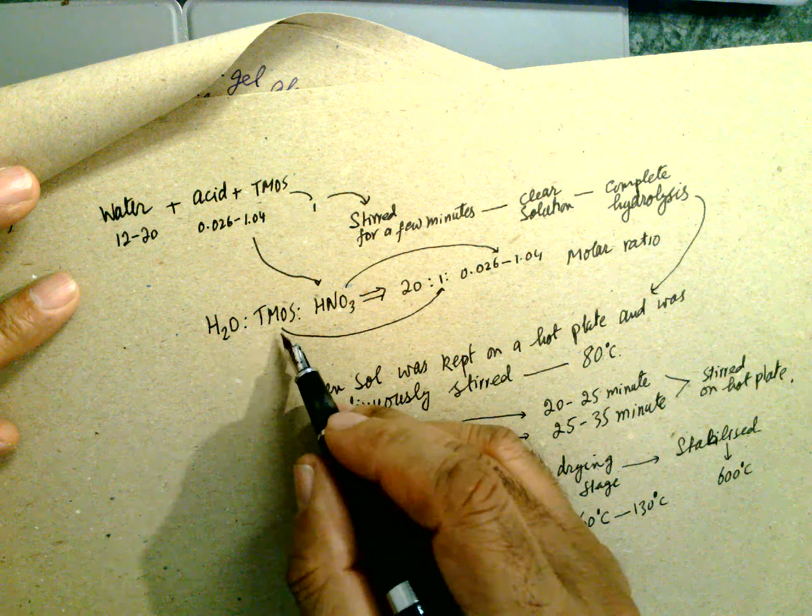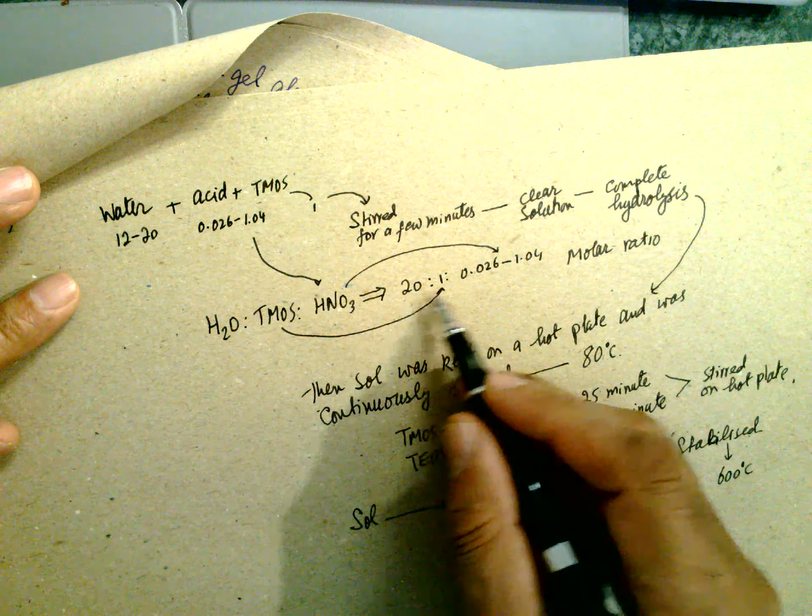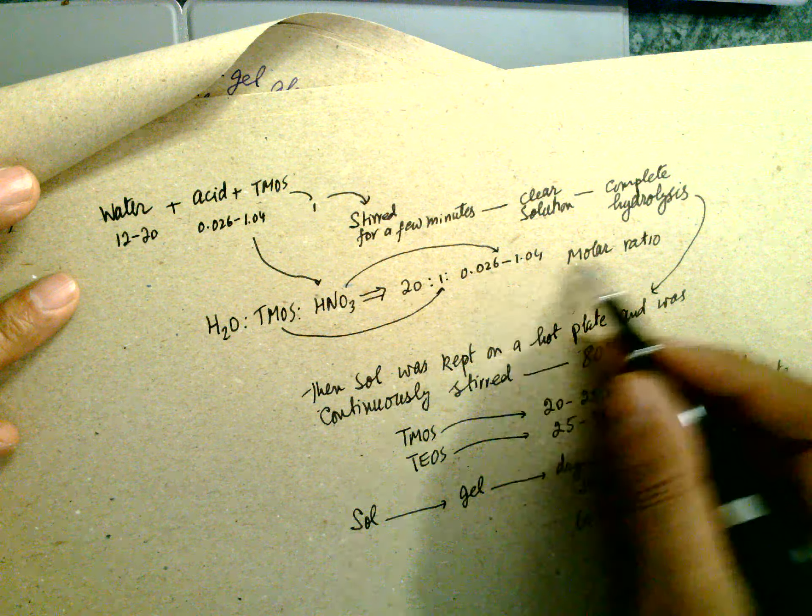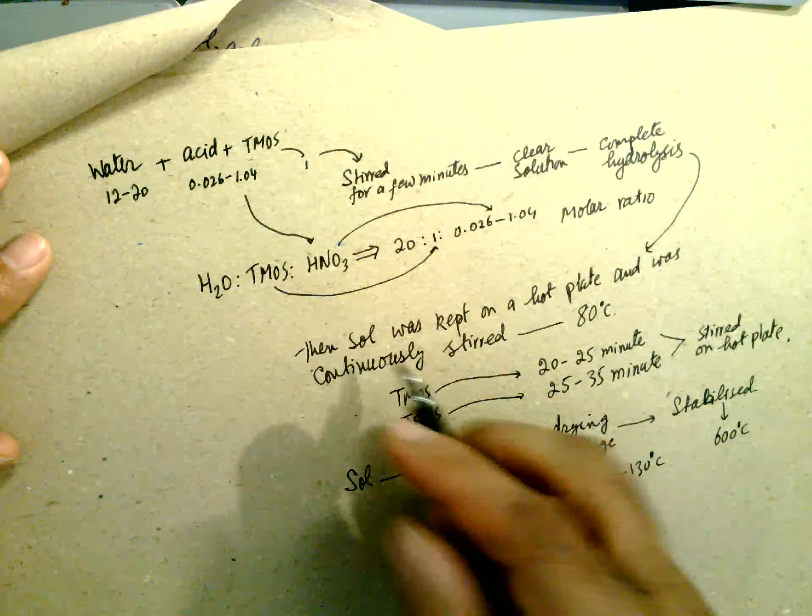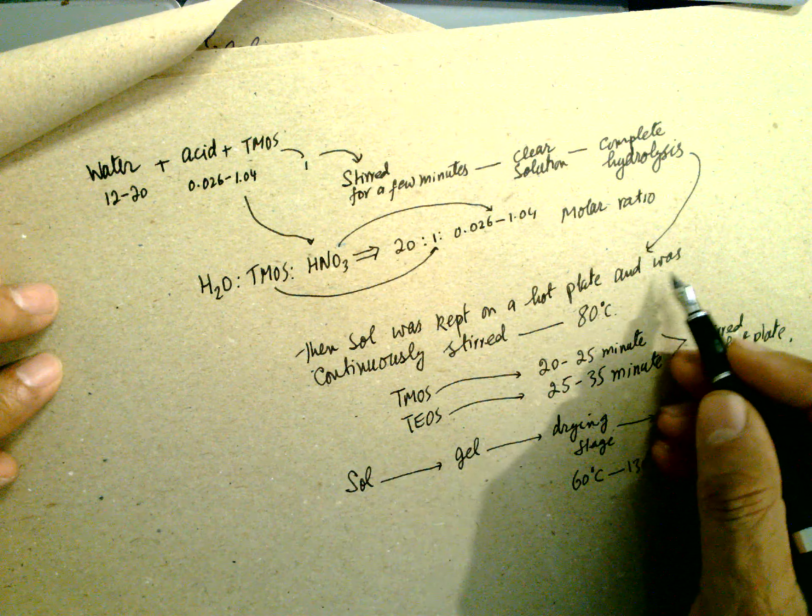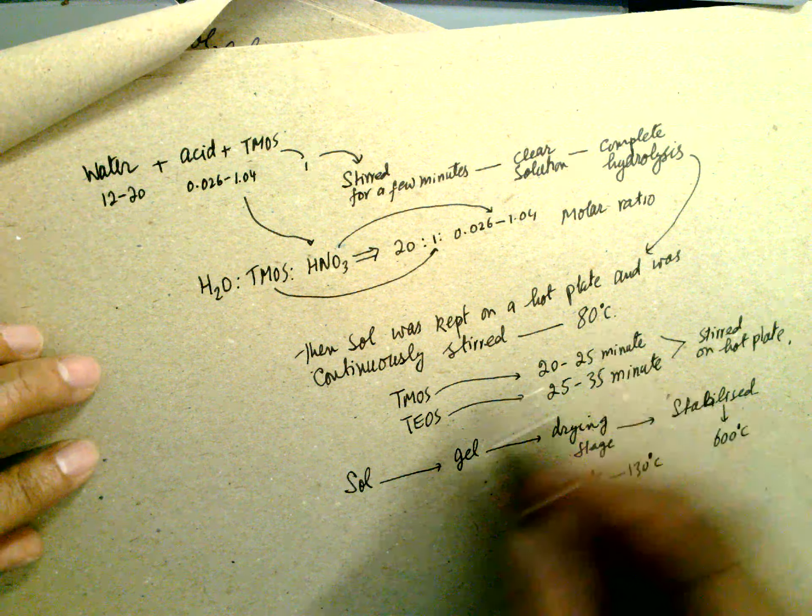Stirred for a few minutes and a clear solution is obtained, and complete hydrolysis happens. H2O, TMOS, HNO3 to 2:1, this ratio, these molar ratios. Sol was kept on hot plate.